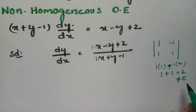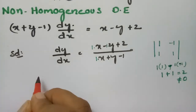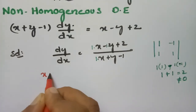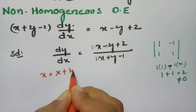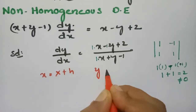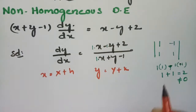Since the determinant is not equal to 0, we use the substitution: small x = capital X + h and small y = capital Y + k.